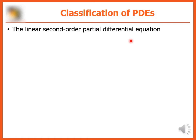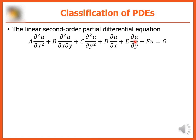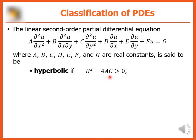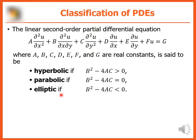Classification of a linear second-order partial differential equation, where a, b, c, d, e, f, and g are real constants: it is said to be hyperbolic if b squared minus 4ac is greater than zero, parabolic if b squared minus 4ac is equal to zero, and elliptic if b squared minus 4ac is less than zero.